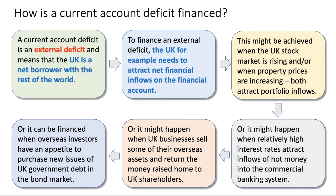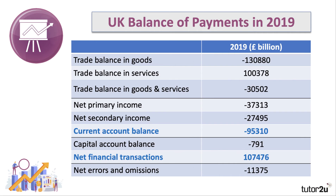If a country can't attract those financial inflows, then under IMF exchange equalisation rules, countries would have to make an adjustment to their reserves of gold and foreign currency, because a fall in the reserves is counted as a plus on the financial account.